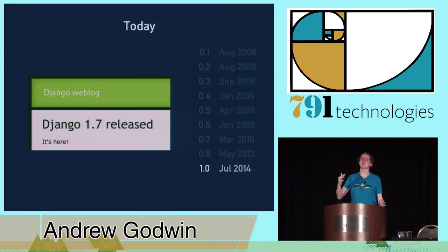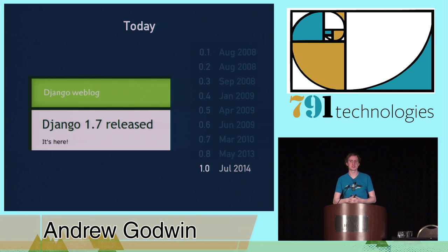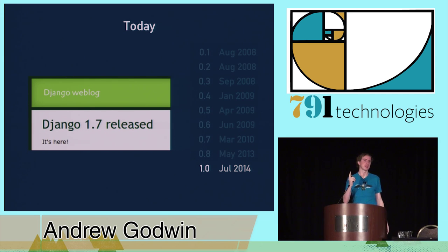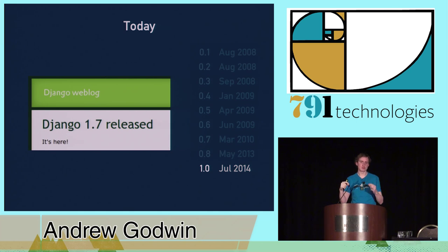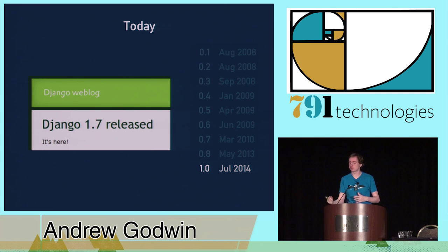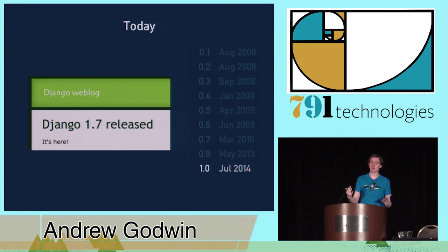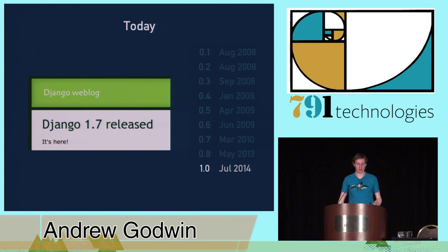There was a long period of me working on Django migrations and not on South. Then a couple of months ago, South 1.0 was released, and of course yesterday, Django 1.7 was released — that's the culmination of all this work. South 1.0 is essentially just 0.8.4 with one extra change: a way of having migrations that can exist alongside Django migrations. South now looks for a South migrations directory by default and then falls back to a migrations directory.